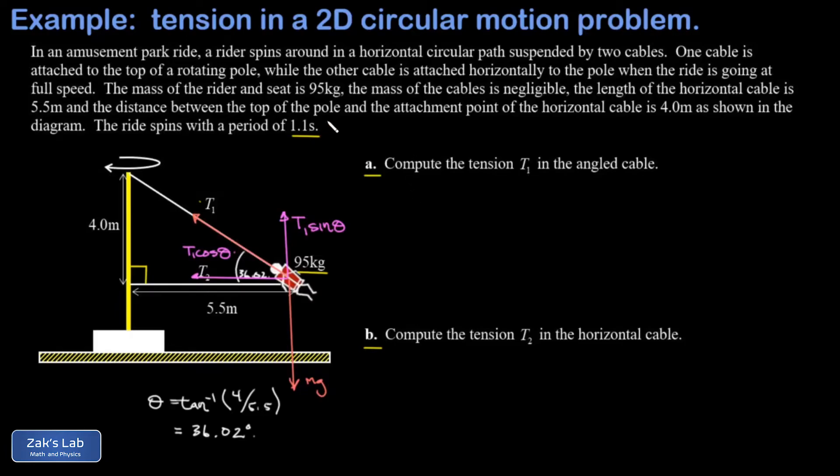To answer part a, we're applying Newton's second law to the rider in the y direction, but the y acceleration is zero. The net force in the y direction is zero. Counting upward as positive and downward as negative, T1 sine theta minus mg equals zero, or T1 sine theta equals mg.